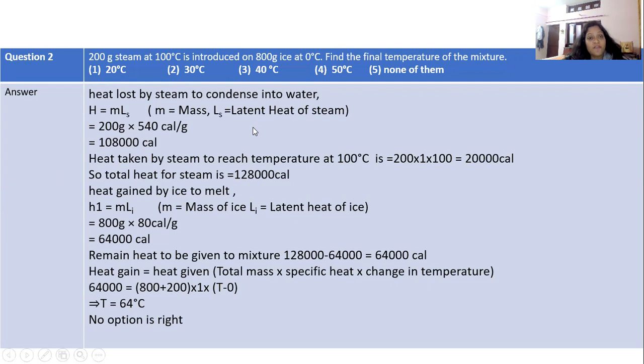When any matter will be in the same state, they will use latent heat to convert into another state. M = mass, L = latent heat of steam. After putting value we will get 10800 calories. This steam will convert into 100°C. We will use the formula MSΔt. We will put value of M as 200, specific heat for water is 1, and temperature will be 100°C. We will get 20000 calories. Total heat for steam is 128000 calories.